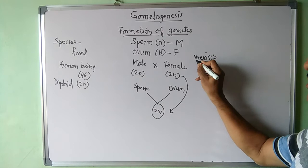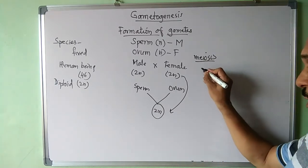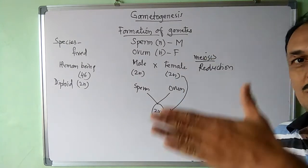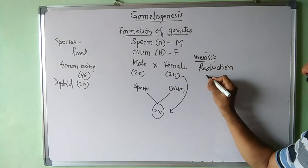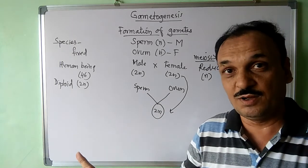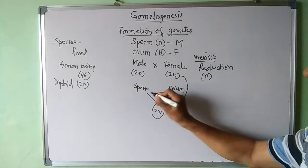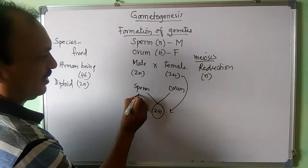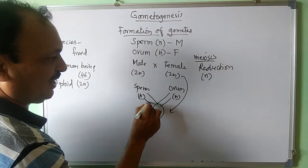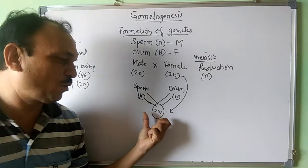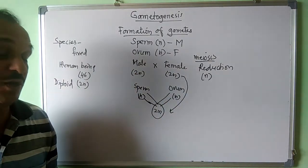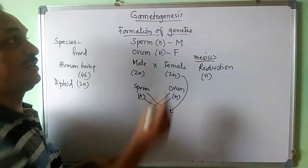Meiosis is the reduction division which reduces the chromosome number to half — that is n number. It produces the haploid structure: sperm and egg. After meiosis, the cell gets n number. When the combination of n and n occurs, the chromosome number is restored in the new progeny. This restoration happens through fertilization, and that is why gametogenesis is important.